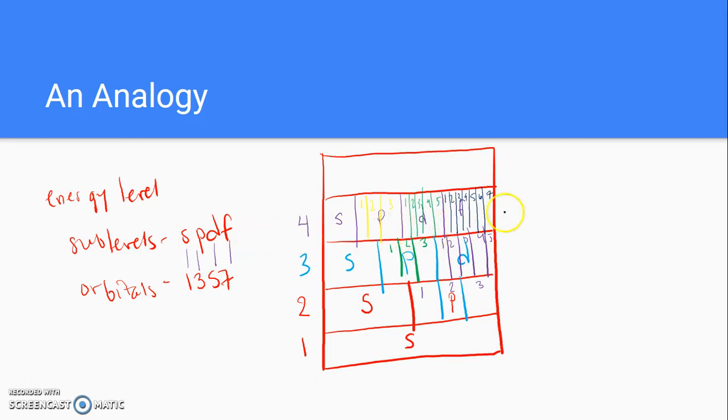So our fourth energy level has all four different types of apartments, and each type of apartment has a different number of rooms. The S has one, the P is a three-bedroom, the D is a five-bedroom, and the F is a seven-bedroom. Now, this is a very loose analogy. I think it helps you kind of understand how all of this stuff breaks down.